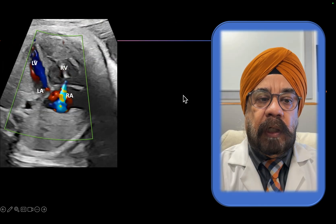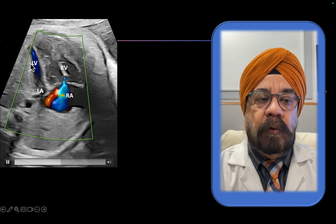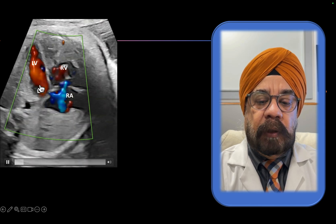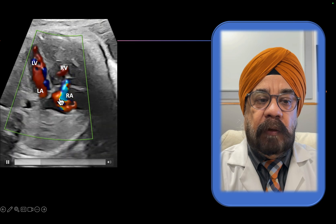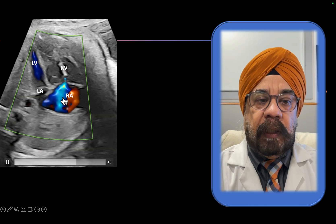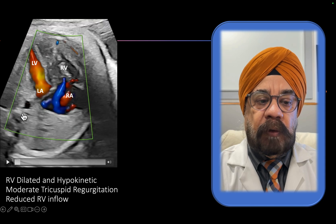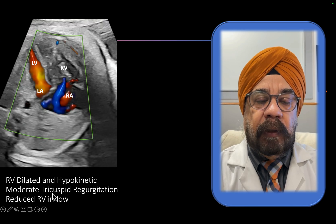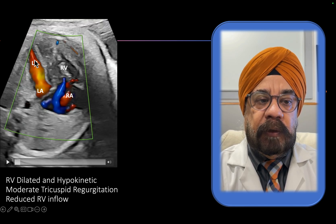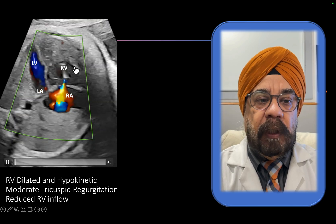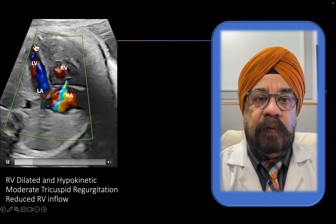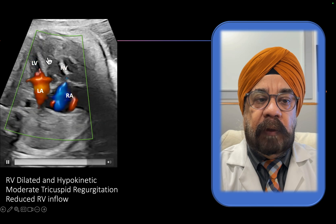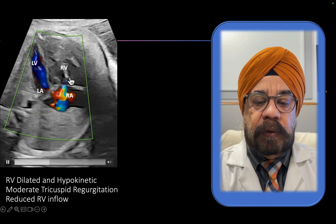On color Doppler you can notice that the LV inflow is good. The RV inflow is reduced and there is significant moderate-to-severe tricuspid regurgitation. The RV inflow is markedly reduced compared to the LV — you can see the LV apex filling right up to the tip, but the RV is not filling. It's essentially only LV inflow of this nature.